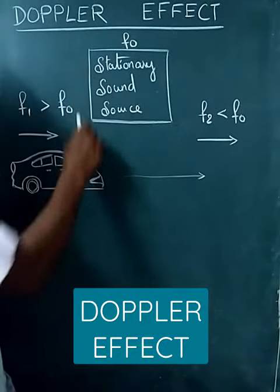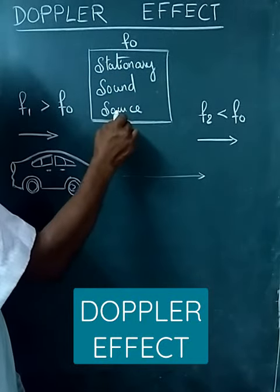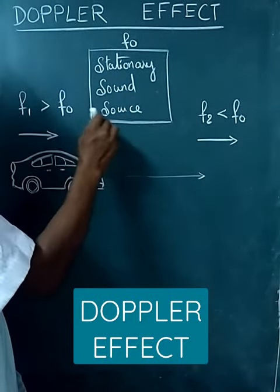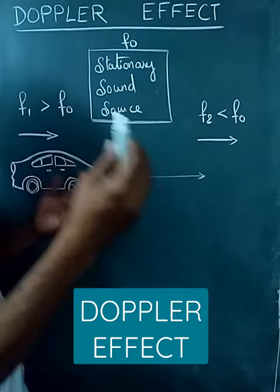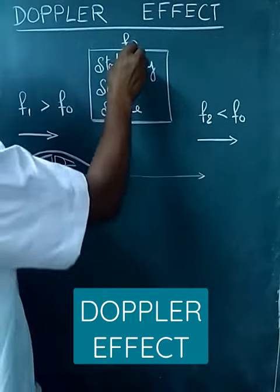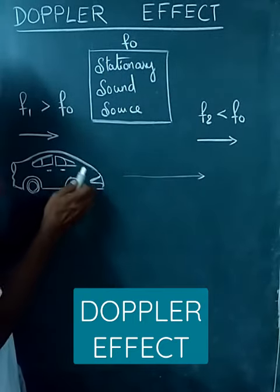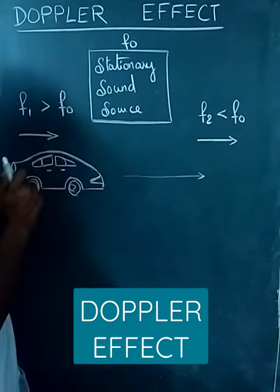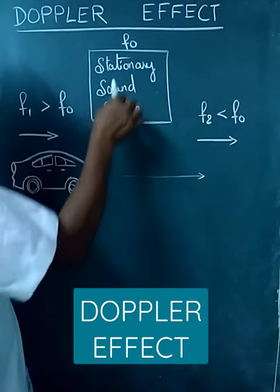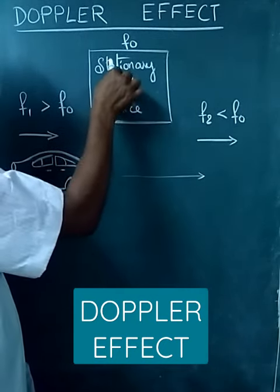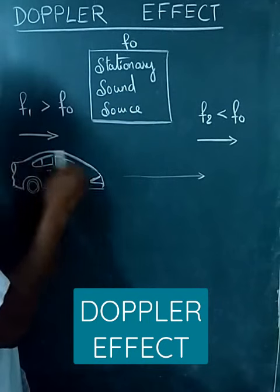We have a stationary sound source which is giving out sound waves of frequency F0. There is a car which is approaching the stationary sound source with a great speed.